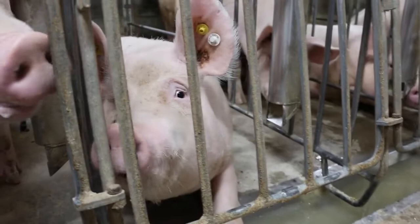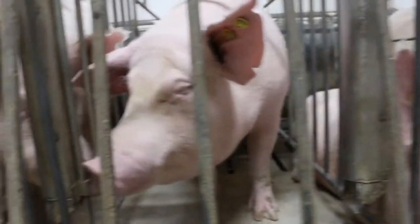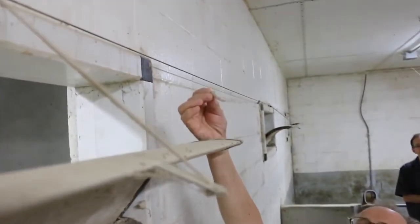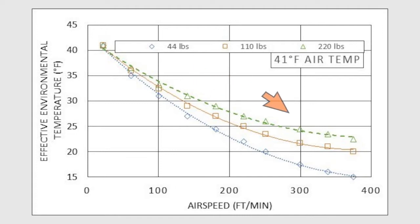The EET is a more accurate measurement of the temperature felt by the animals, because it takes into account several factors, including humidity and air speed. In this case, the animals feel a decrease in the EET due to the increased convection. The cooling effect is more dramatic for smaller 44-pound animals than for bigger 220-pound animals, because of the smaller animals' ratio of surface area to body mass.